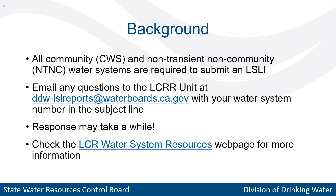All community and non-transient non-community public water systems are required to submit an initial inventory, which totals to a little over 4,300 systems in California. About half of those systems reported having less than 50 service connections, so this presentation is geared toward very small systems.